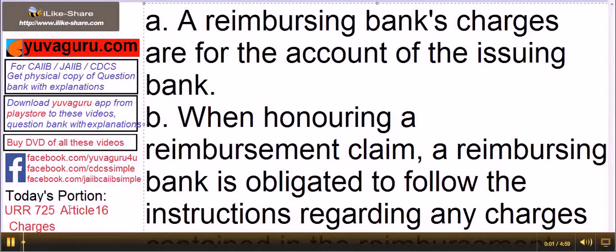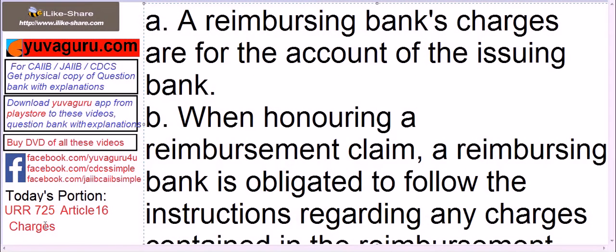Let's study Article 16 of URR 725 — charges. A reimbursing bank's charges are for the account of the issuing bank. It's a plain and simple sentence: any charges of the reimbursing bank are to the account of the issuing bank. There is a disclaimer — 'unless otherwise stated' — but even if the issuing bank states that charges are to the account of someone else, the issuing bank is still responsible.